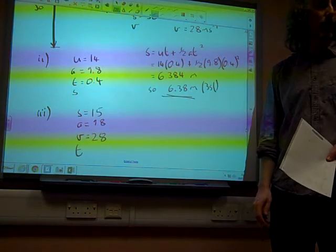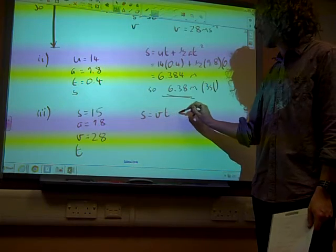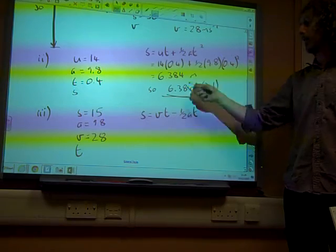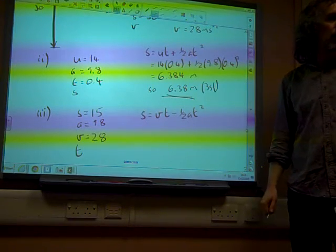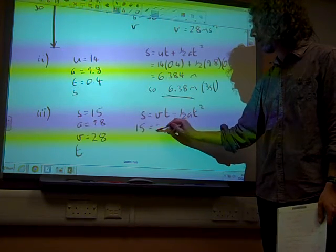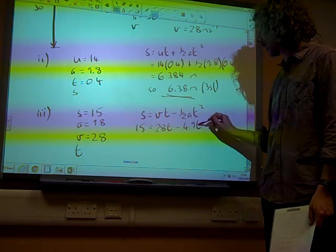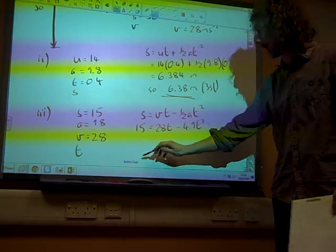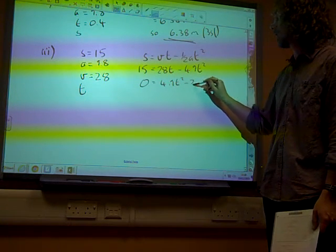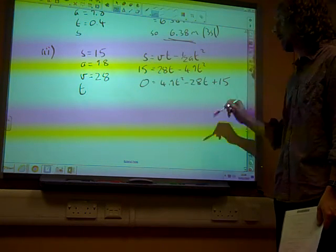And I can connect all of those, can't I? Because I've got the other version of that one that says that S is VT minus a half AT squared. That's the other equation that goes in parallel with that one. So I can say that 15 is 28T minus a half times 9.8 T squared. And it looks like I've ended up with a quadratic equation.